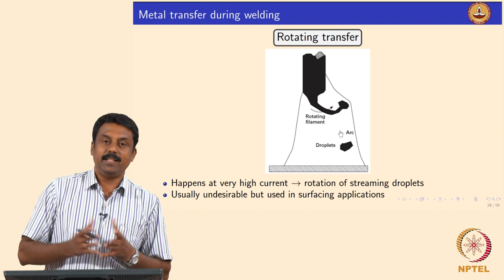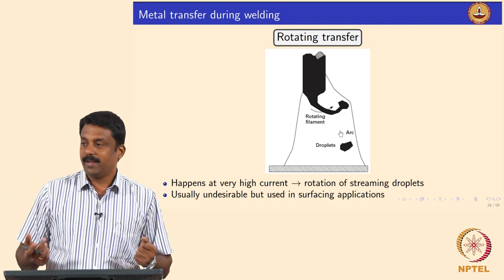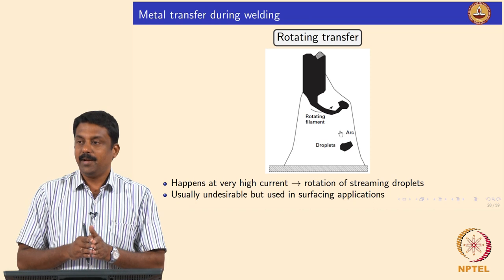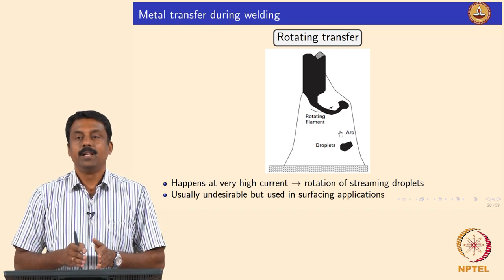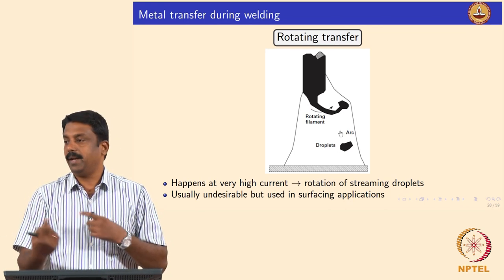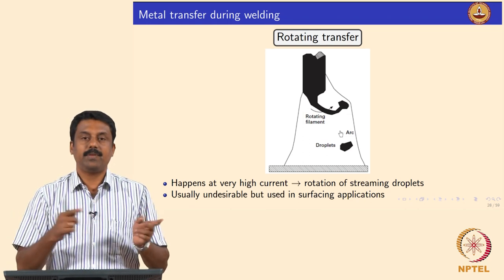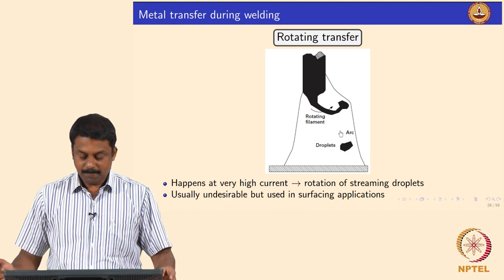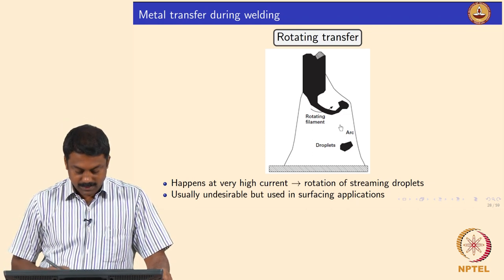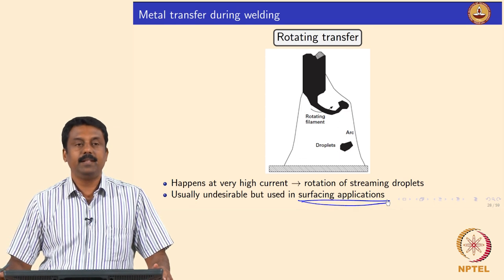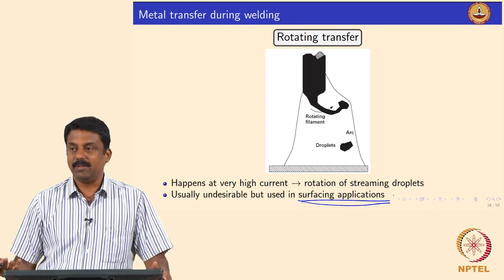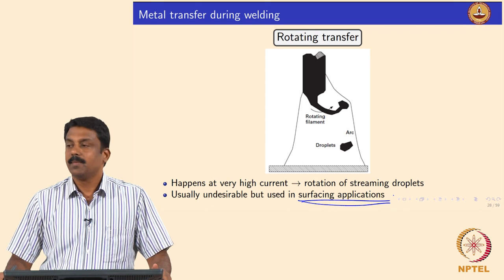If current is increased further, jetting spray can become rotating transfer. The Lorentz force continuously forms and certain magnetic forces start rotating or changing the path of the spray, resulting in a rotating spray transfer where the droplet is deposited at various places. This is sometimes used for surfacing using FCAW or GMAW surfacing, but for welding applications it is not advisable.